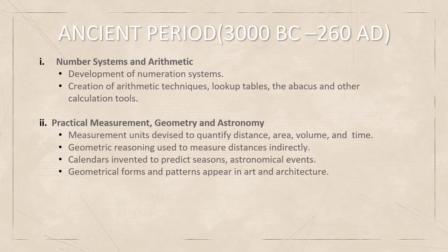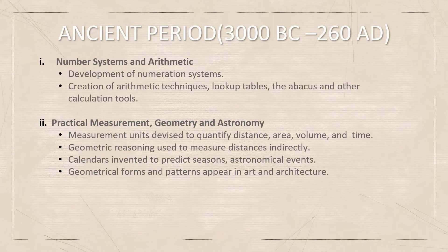The Ancient period spans from 3000 BC to 260 AD. In this period, they developed the number system, arithmetic techniques, look-up tables, the Abacus, and other calculation devices. They also devised ways to gauge distance, area, volume, and time. A calendar was invented to predict seasons and astronomical events.